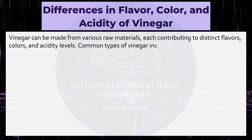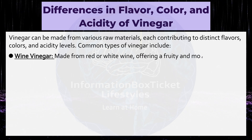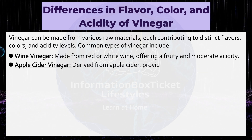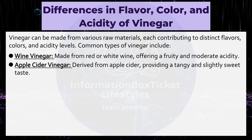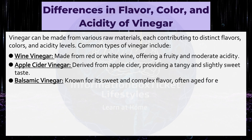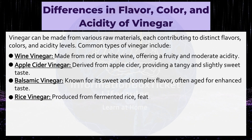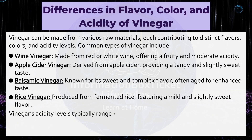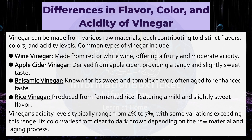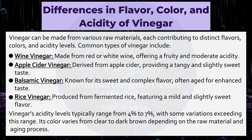Common types of vinegar include: wine vinegar, made from red or white wine, offering a fruity and moderate acidity; apple cider vinegar, derived from apple cider, providing a tangy and slightly sweet taste; balsamic vinegar, known for its sweet and complex flavor, often aged for enhanced taste; and rice vinegar, produced from fermented rice, featuring a mild and slightly sweet flavor. Vinegar's acidity levels typically range from 4% to 7%, with some variations exceeding this range. Its color varies from clear to dark brown depending on the raw material and aging process.